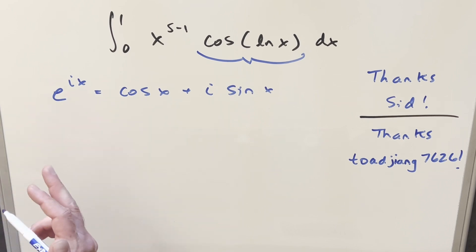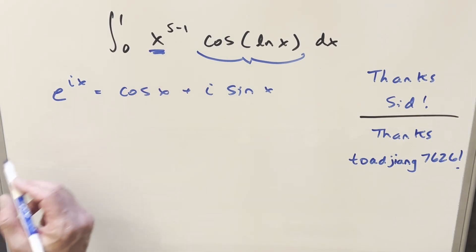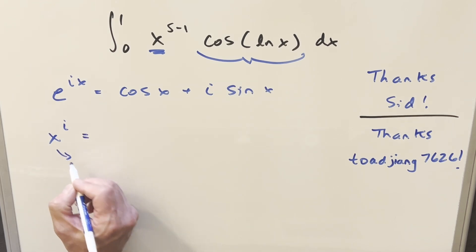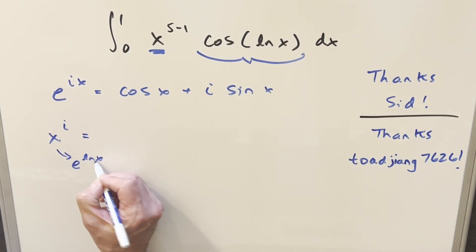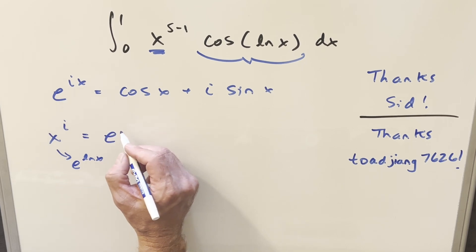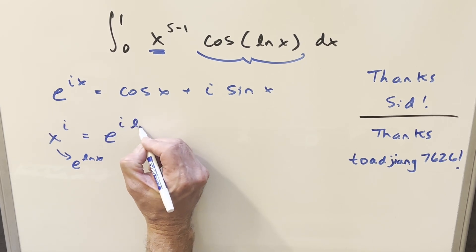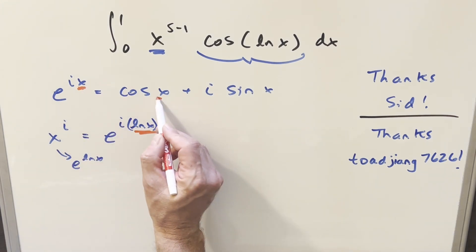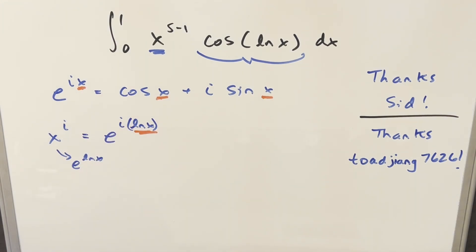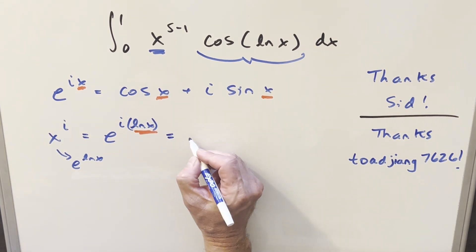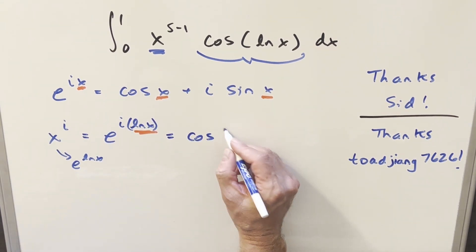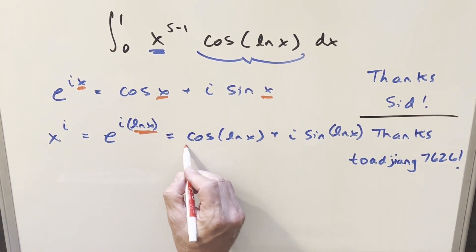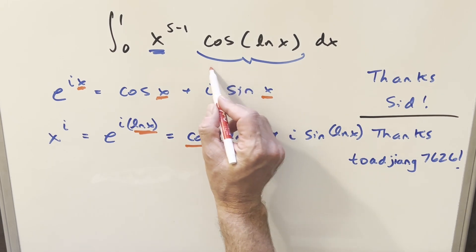What we can do is create something with the same base as the x here. If we have x to the i, rewriting the base as e to the ln x, we get e to the i ln x. Using Euler's formula with ln x as our input, this becomes cosine ln x plus i sine ln x — and we've just created our cosine ln x right here.